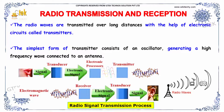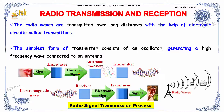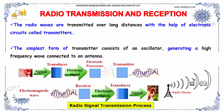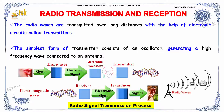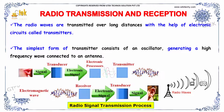The signal is converted into electronic signals using a transducer, and through electronic processing it is moved to the transmitter. This is how the radio signal transmission process works.